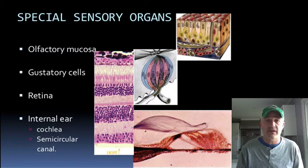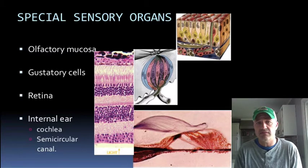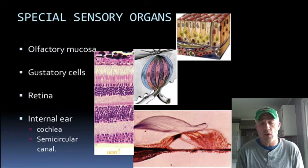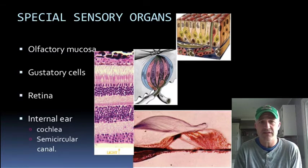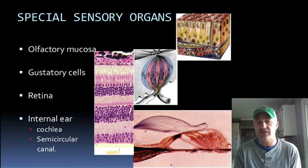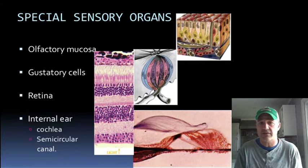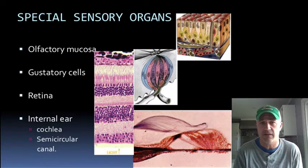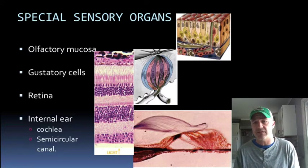Histologically we're not going to get too deep into general senses — there are a couple things we might look at when we do the skin, but outside of that the histology can be difficult to see. What we're really going to focus on is these special senses. I'll show the olfactory mucosa and the taste buds first. We haven't been able to find a good digital slide of the olfactory mucosa, so I won't expect too much on that one.